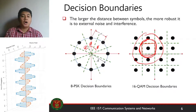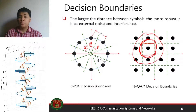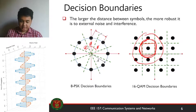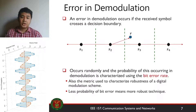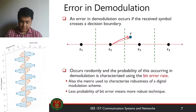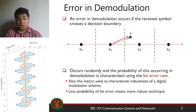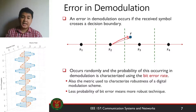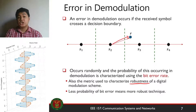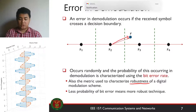The robustness of a digital modulation technique is largely dependent on the minimum distance between symbols, which is related to the power needed to transmit the symbols over the channel. An error in demodulation occurs when the received symbol crosses a detection boundary — if the noise is large enough, the symbol will be displaced enough that the receiver thinks it's a different symbol. This event occurs randomly, and the probability of it occurring is characterized by the bit error rate, which is correlated to the minimum distance.